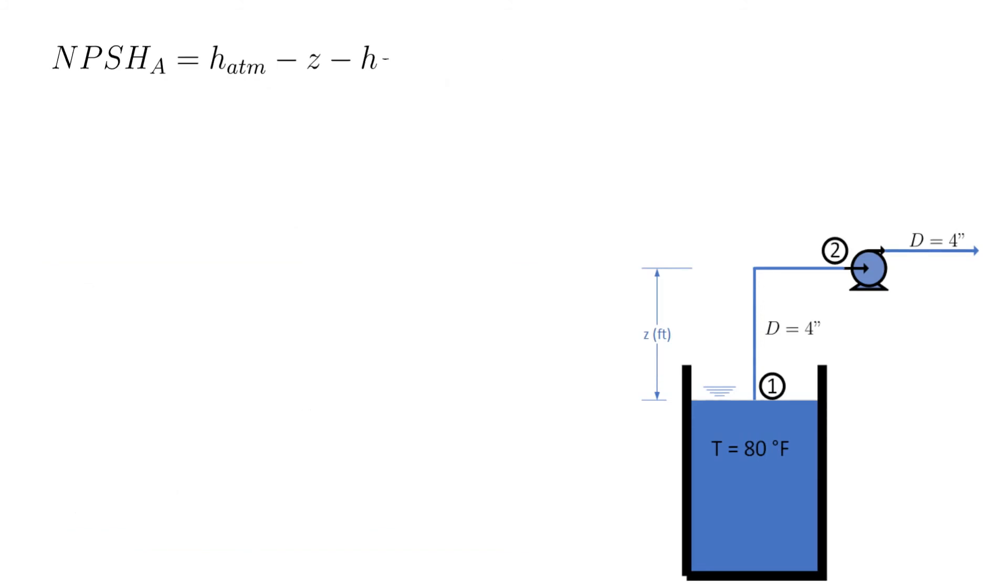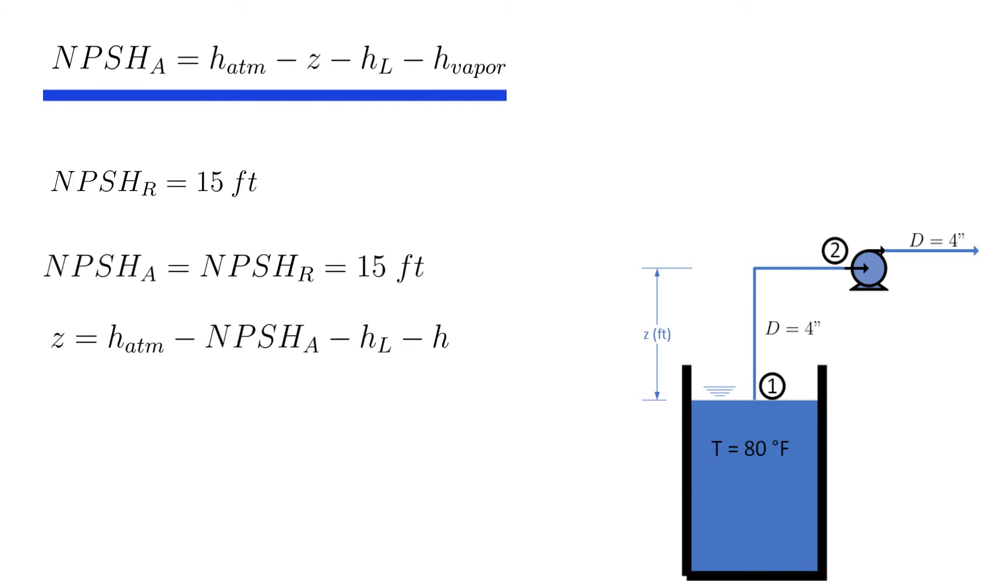Now we have everything we need to solve for the unknown elevation z. The details are provided here. Maximum distance between the suction of this pump and the water surface is 7.65 feet.